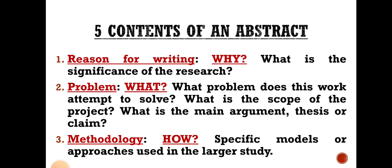Number two is problem — it defines the 'what' of the research. What problem does this work attempt to solve? What is the scope of the project? What is the main argument, thesis, or claim? So the problem section tells us about the research problem — what we are going to do, what the problem is, what its scope is, and what our central claim is about that particular problem.